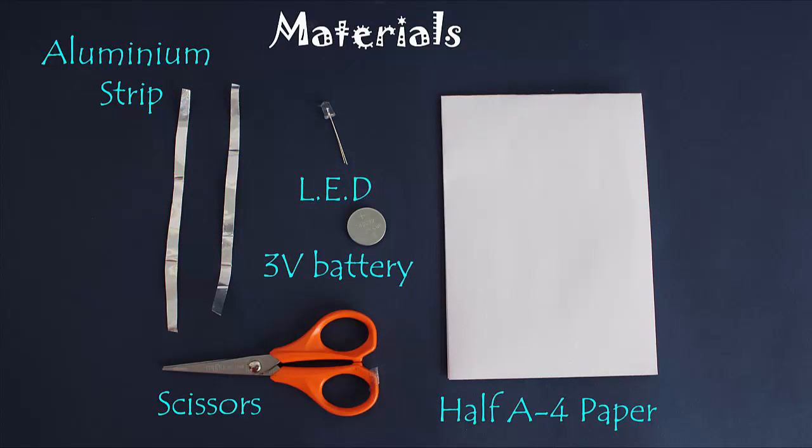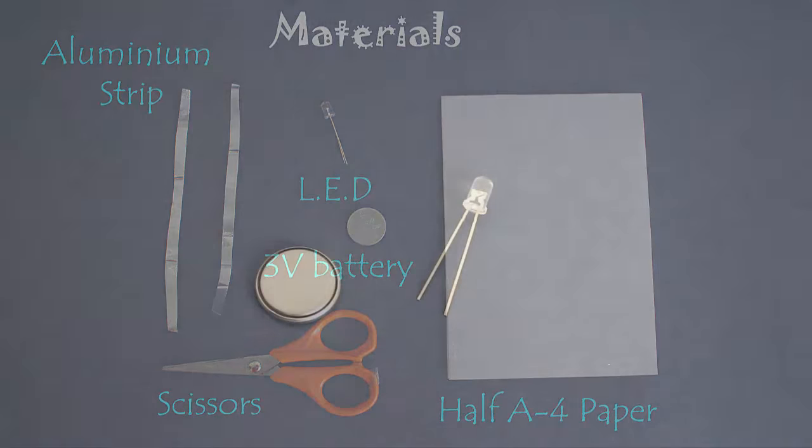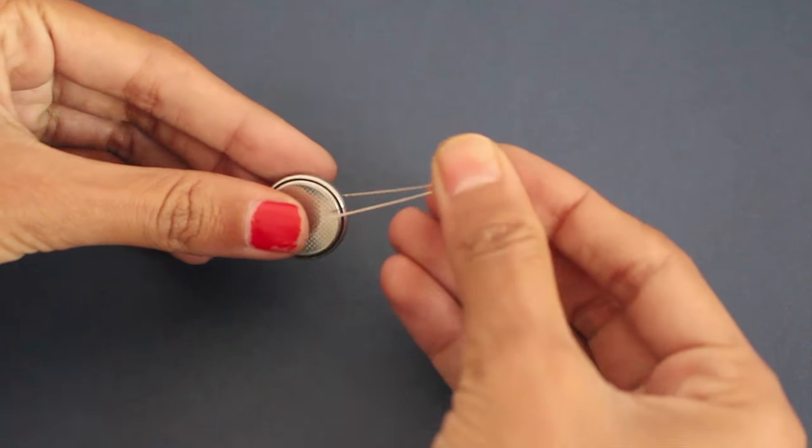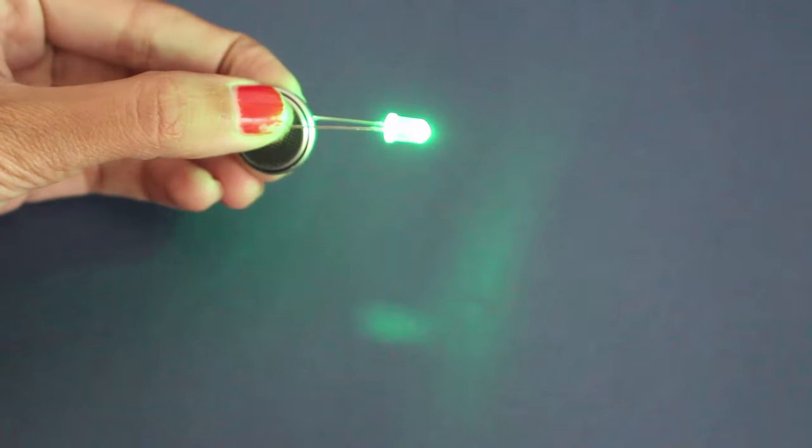The essential parts are a button cell, an LED, and some aluminum strips. The LED lights up when its ends are connected to a button cell.